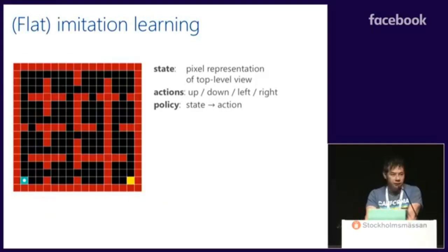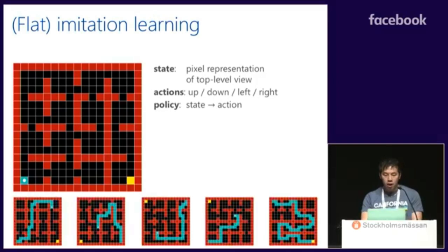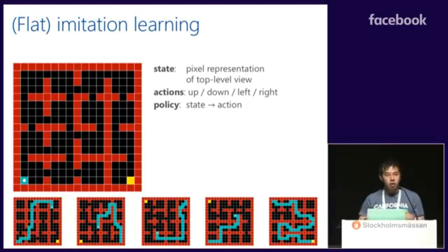Let's start with a maze navigation domain. The learner, which is the white dot, has to find its way to the target in yellow, avoiding the lava — the red squares — in an environment viewed as a 4x4 room structure. The basic action is one step: up, down, left, or right. We can create thousands of such environments, each designed so that the shortest path from start to finish is about 50 time steps, making it challenging for reinforcement learning. We aim to find a policy mapping states to actions that generalizes to unseen environments, where states are pixel representations of the top-down view.